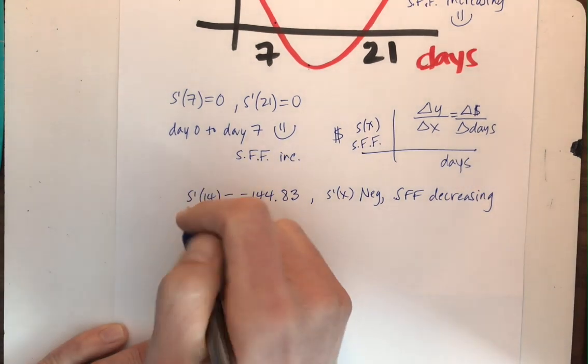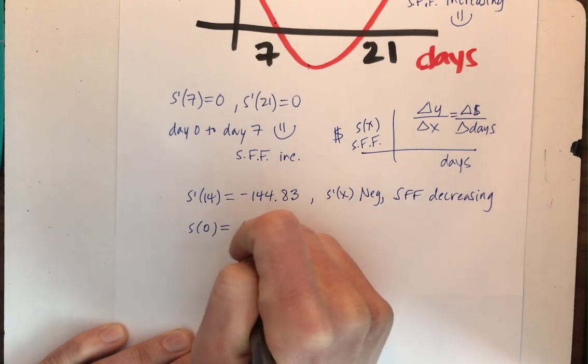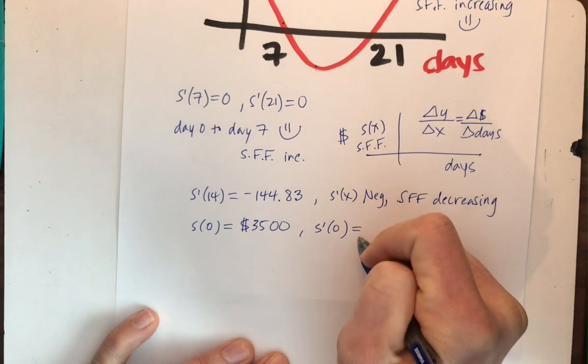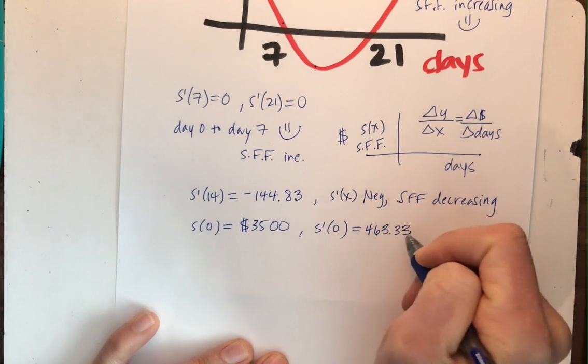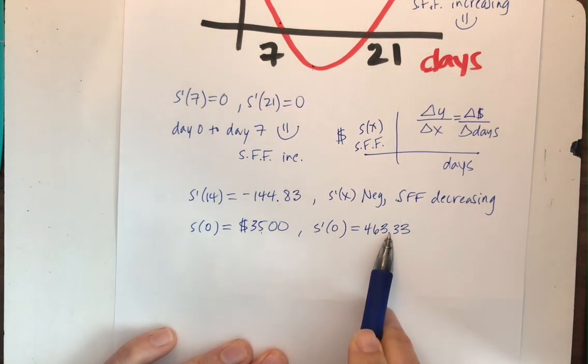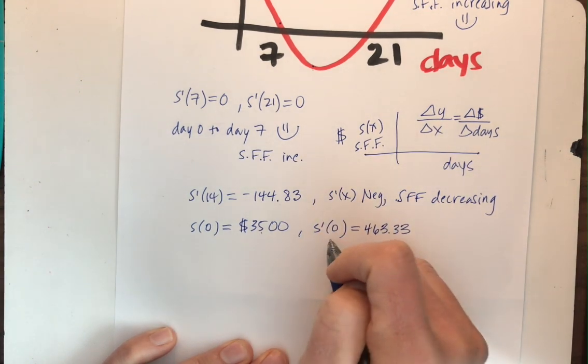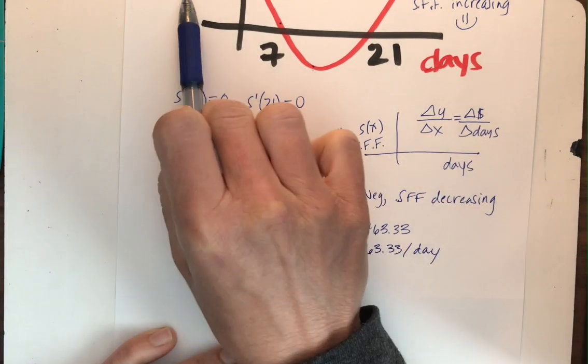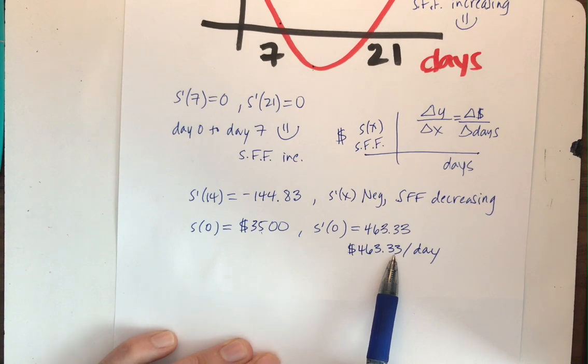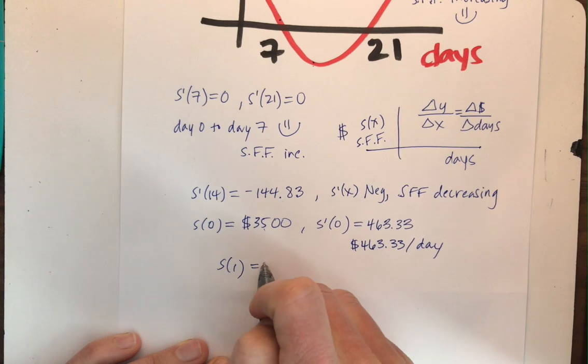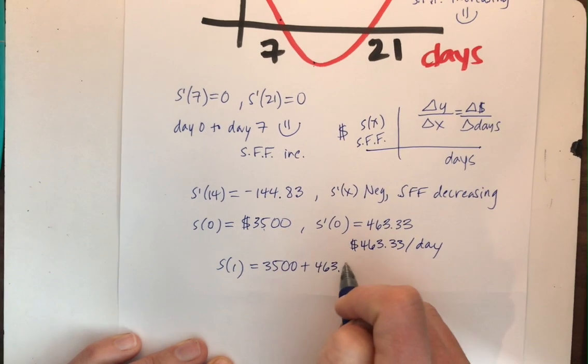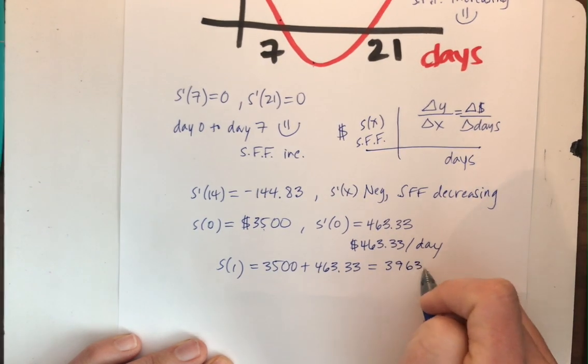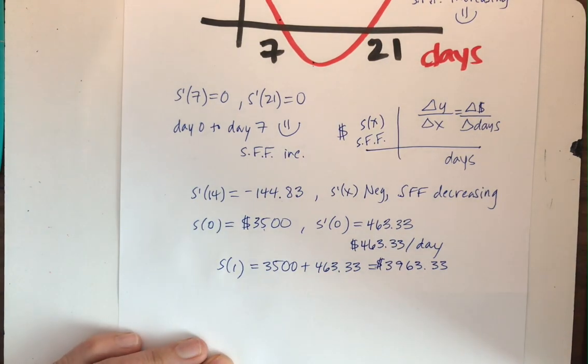Okay, for C, S of zero. So the Sarah Fisher fund at zero time was $3,500. A great start. So, and on that zero day, I am changing at a rate of $463.33. So if I start at $3,500 and I'm changing by $463.33. So this means on the zero time, I am making, in this instance, $463.33 per day, right? Tying in that slope. I'm making $463.33 a day. So that means on the first day, I'm going to take what I had before, and I'm going to add that $463.33. And I'm crushing it. Add those things up. $3,963.33. Boom. Happy Sarah. Happy students.